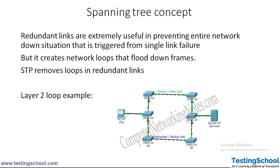Suppose four ports are there. From port one the frame has been received, and it falls into any of the three categories — unknown unicast, broadcast, or multicast. If it was received from port one, it will be flooded to port two, port three, and port four — all other ports except port one. Since it was received from port one, it will not be sent back to that port, but will be forwarded to all the other ports. This is the basic switching functionality.